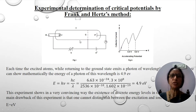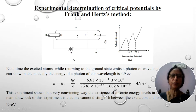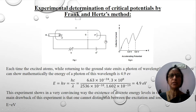The experimental arrangement of the Frank and Hertz method is as shown in figure 1. It consists of a tube T. In this tube T, gas of the element whose critical potential is to be determined is filled at a pressure of about 1 millimeter of mercury. The element Frank and Hertz considered is mercury vapors. The filament F, when heated with a low tension battery, emits electrons, and these electrons are accelerated towards the grid G by maintaining a potential difference between F and G with the help of a battery.